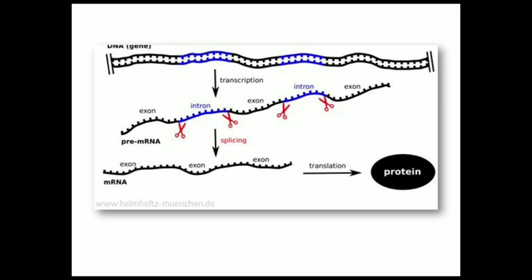This RNA is called pre-mRNA because it has not yet been converted into mature mRNA. To convert pre-mRNA into mRNA, three modifications are done: addition of a 5' cap, addition of a poly-A tail at the 3' end, and removal of introns. These three modifications are called post-transcriptional modifications. So splicing, or removal of introns, is a type of post-transcriptional modification that results in converting pre-mRNA into mature mRNA, which does not contain any introns.